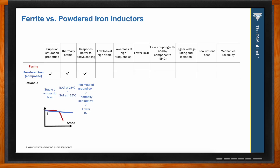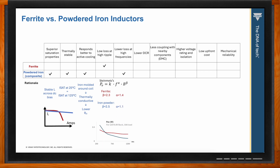As far as core losses, ferrites typically win — but only to a point. The Steinmetz equation, commonly used for approximating core losses, shows a frequency loss component alpha and a flux density component beta. At higher ripple and higher voltage drive levels, ferrites have significantly lower core loss due to lower eddy current formation. However, as frequency increases, powdered iron performs better, as evidenced by the lower frequency coefficient.